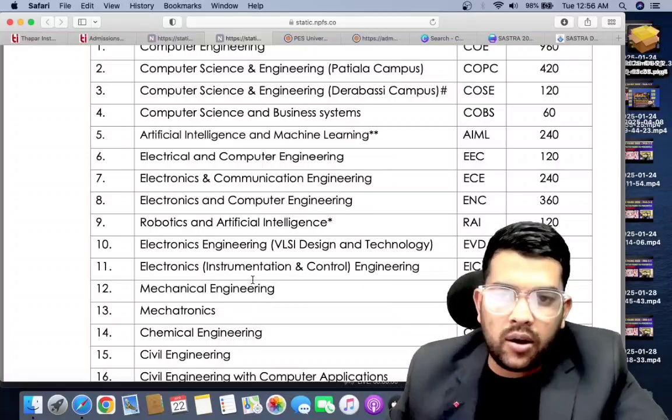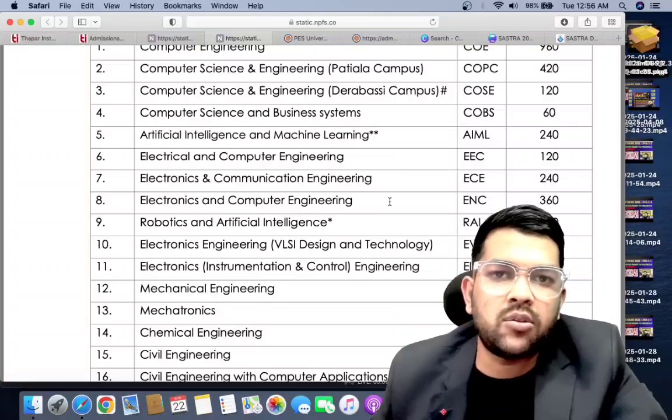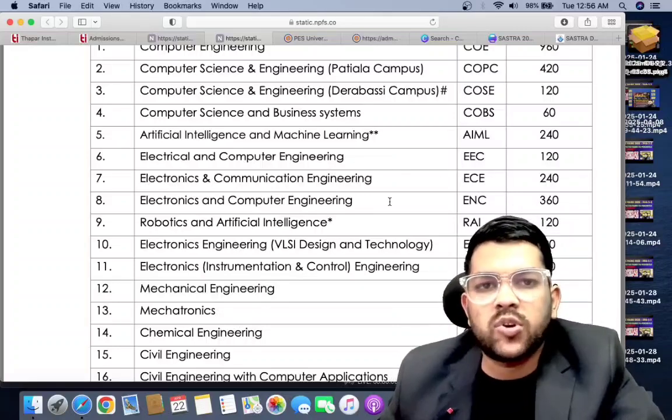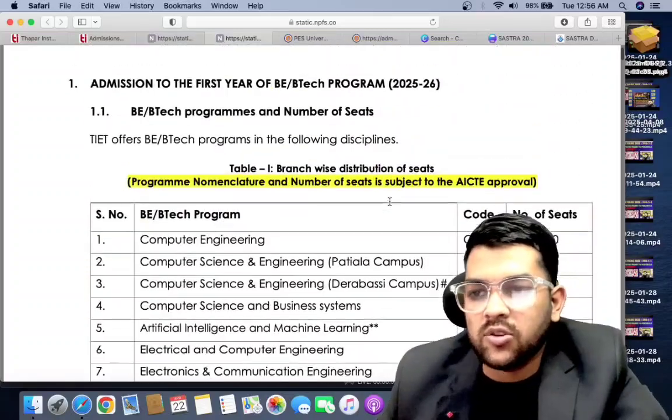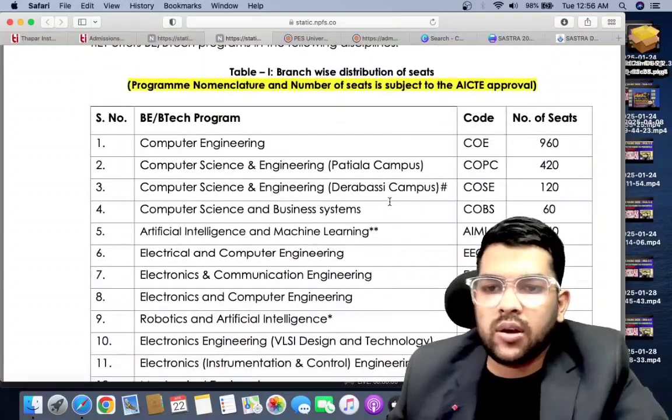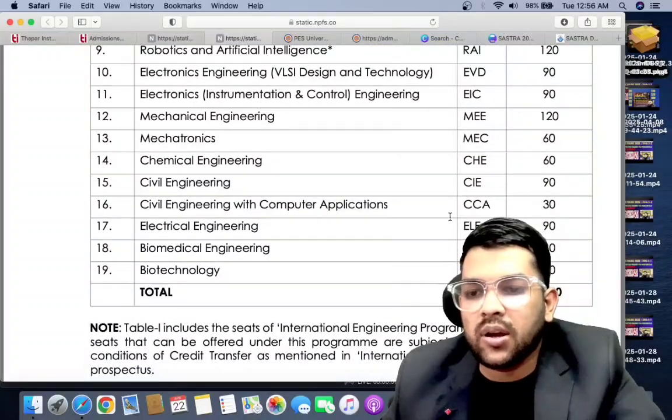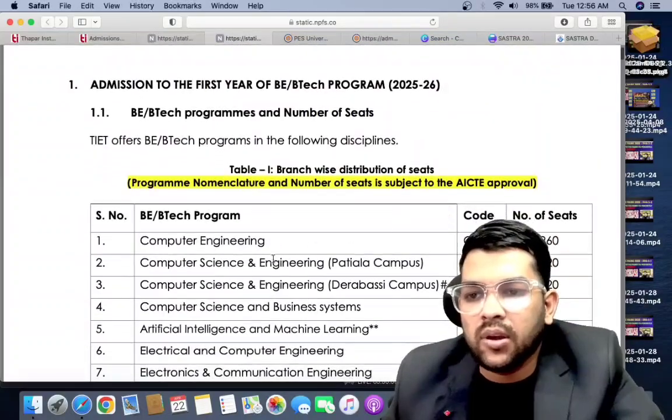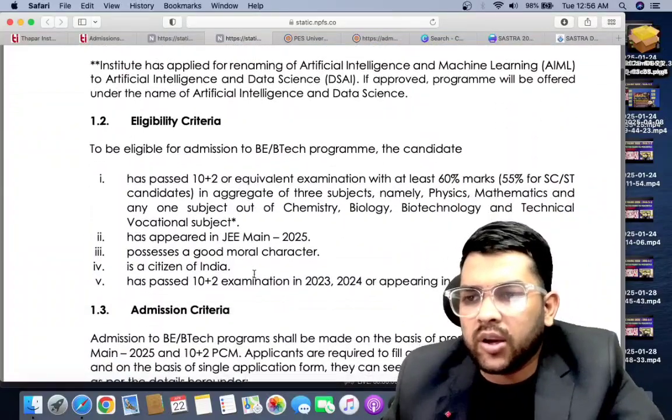Branch is very important. After four years you have to work in that field, so it should be according to your interest. I will help you to find your interest - which branch is best for you by explaining all the syllabus of different branches, what you need to study and what type of scope you will have after four years. Here you can check all the branches available - total 3,390 seats are available.